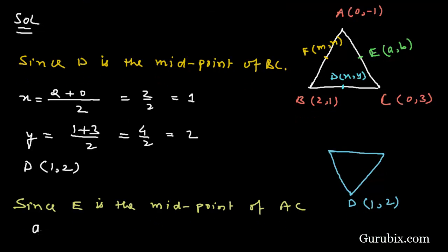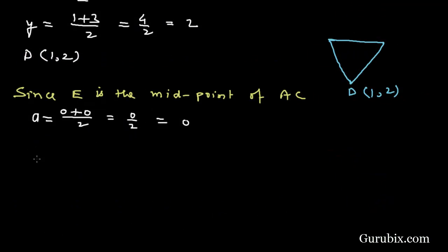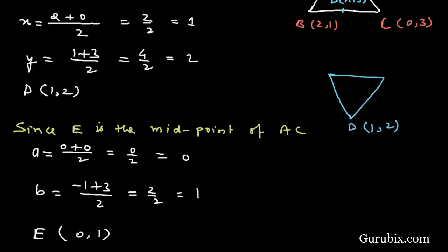Since E is the midpoint of AC, the value of A is (0 + 0) / 2 = 0/2 = 0, and B is (-1 + 3) / 2 = 2/2 = 1. Therefore, the coordinates of E are (0, 1).